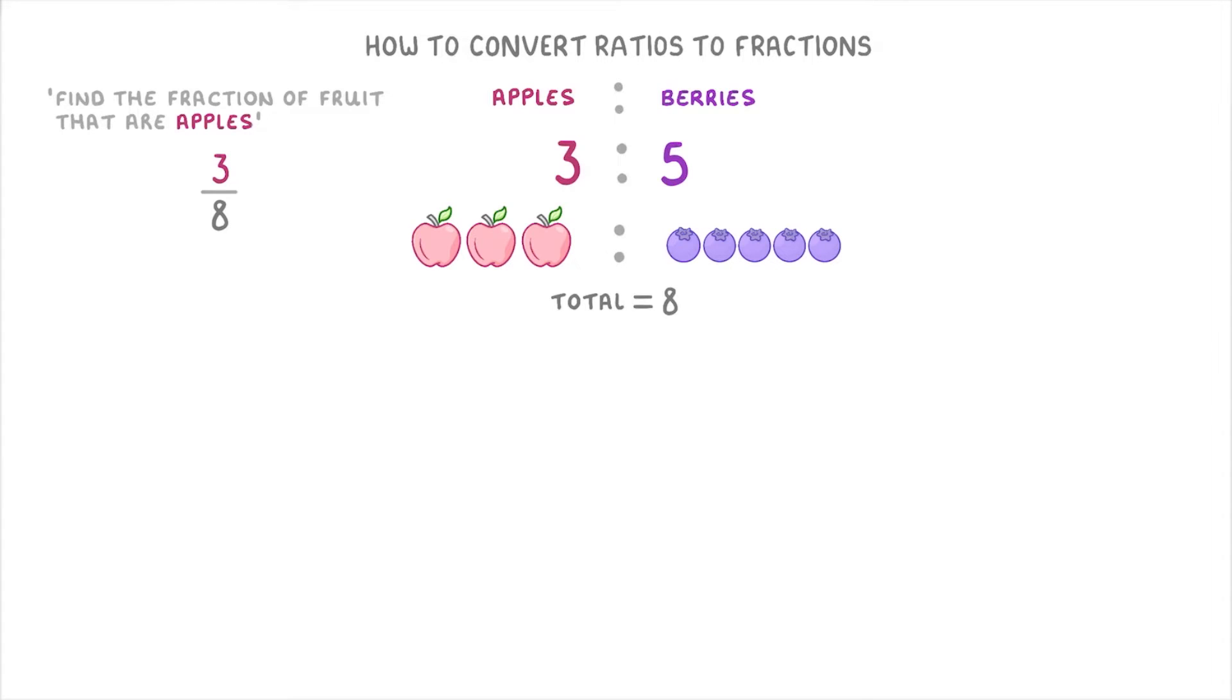And likewise, if we want to define the fraction of fruits that are berries, we just do the same thing. But this time we do 5 over 8, because 5 of every 8 pieces of fruit are berries.